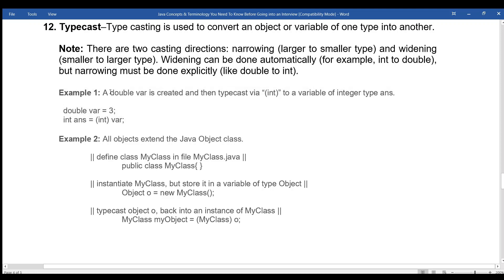Example 1: A double var is created and then typecast via int to a variable of integer type ans. double var equals 3, int ans equals int var.